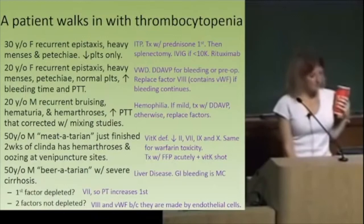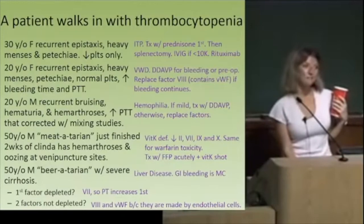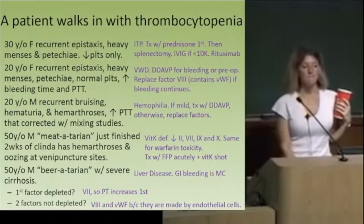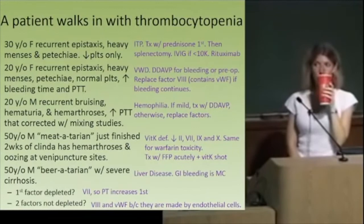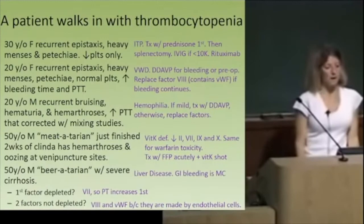What if it's a young woman with recurrent epistaxis, heavy menstrual bleeding, and petechiae, but the bleeding time and the PTT are also high? That's von Willebrand's disease, not ITP. Why is the PTT high in von Willebrand's? Because von Willebrand factor is bound to factor VIII.